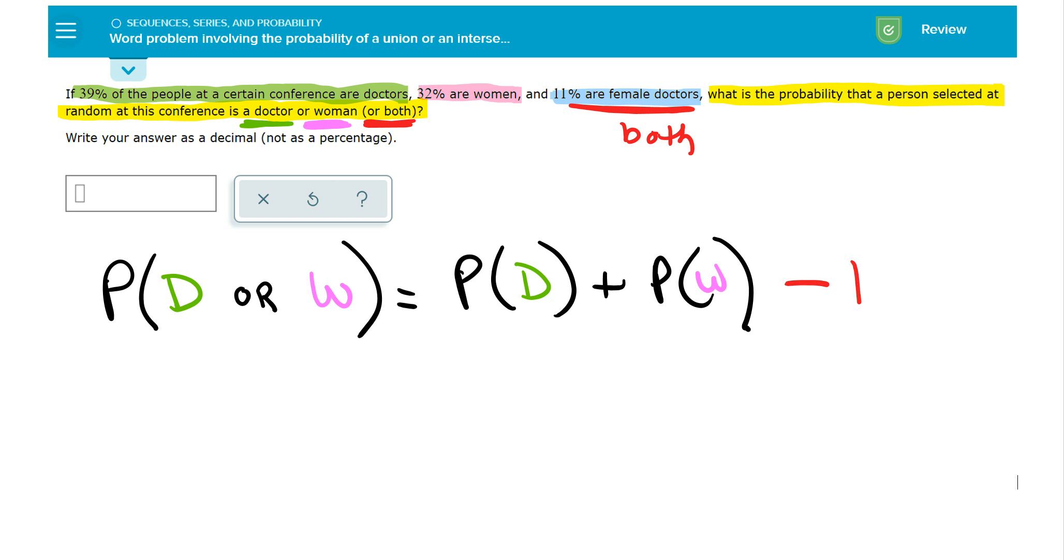So you're actually going to have to subtract out the probability of both. Otherwise, you're going to count the both twice. So the probability of a doctor was 39%, but it does say right here, write your answer as a decimal, not a percentage. So this is going to be 0.39.